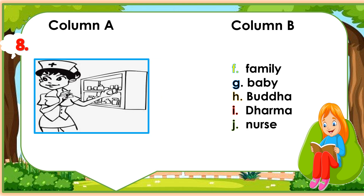Number 8: Look at this picture. What's this? Match this picture with a correct word in column B. F. Family. G. Baby. H. Buddha. I. Dharma. J. Nurse. Write the letter only.